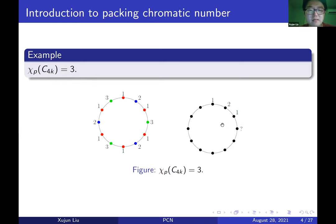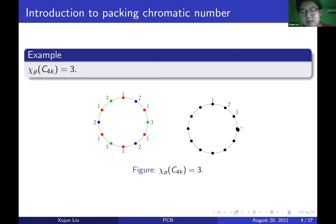We can check this is a valid packing 3-coloring. On the right-hand side, if we only have two colors, we use color 1 for the first vertex, color 2 on the right, then color 1 for the next vertex, but for the fourth vertex we run out of colors — we cannot use 1, and it is also too close to the vertex with color 2.